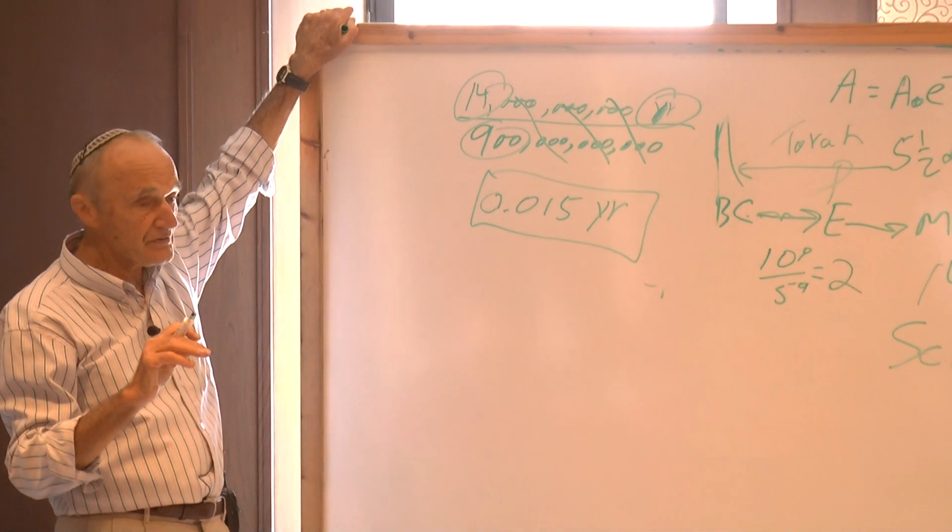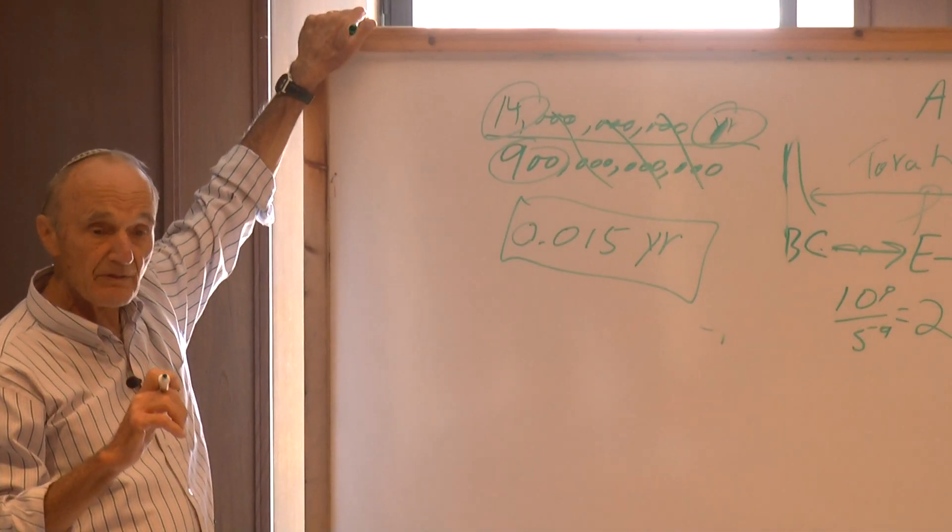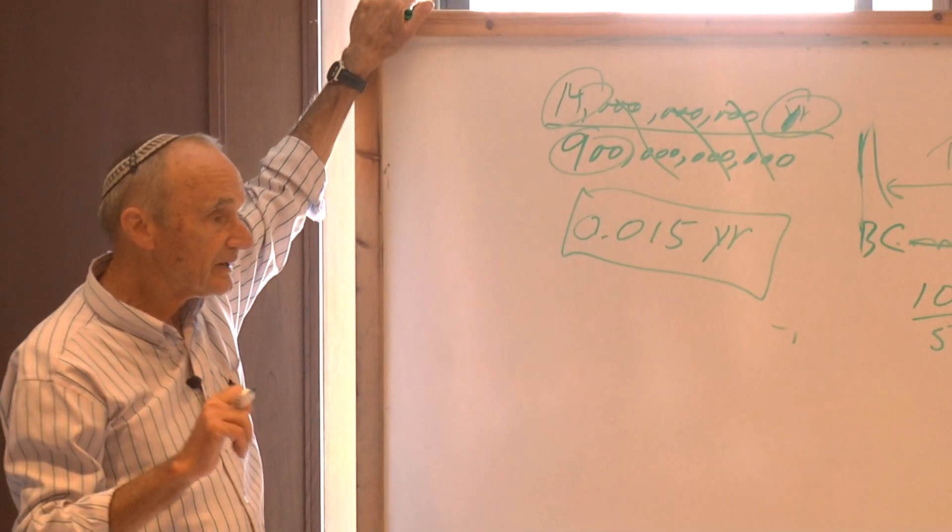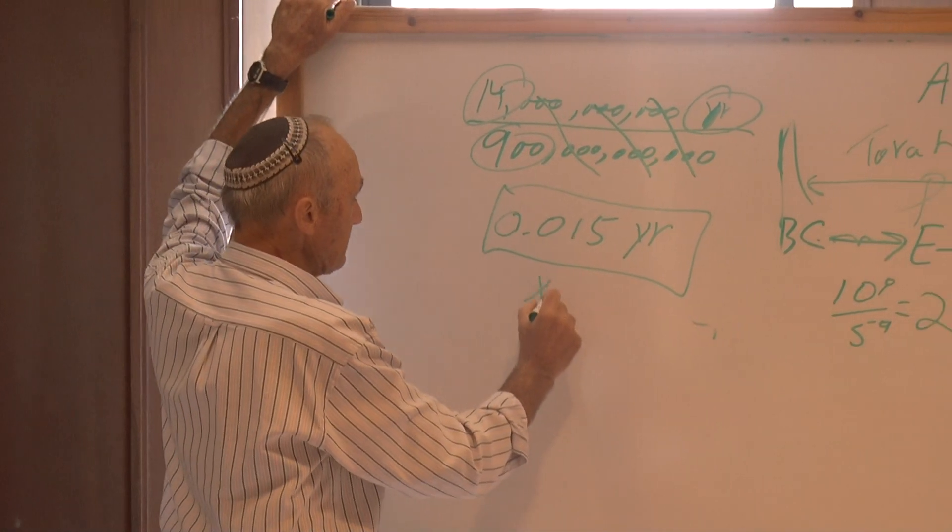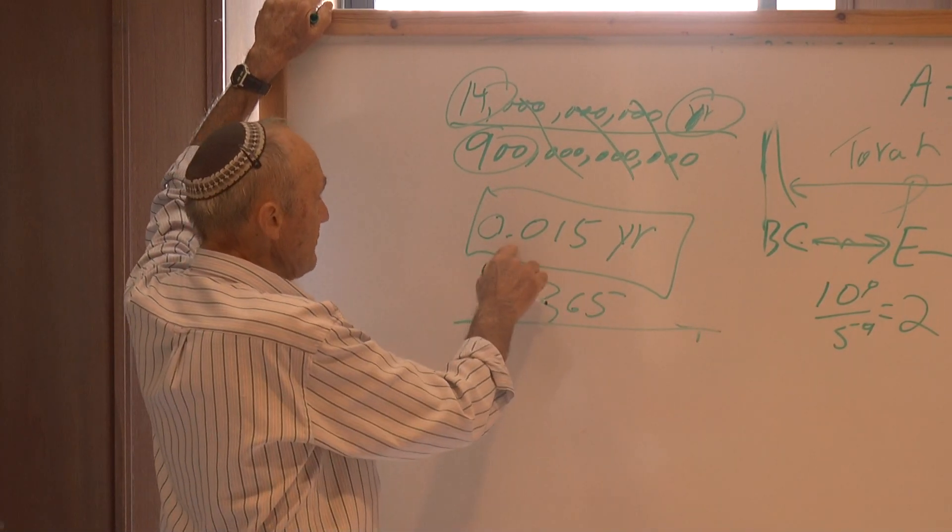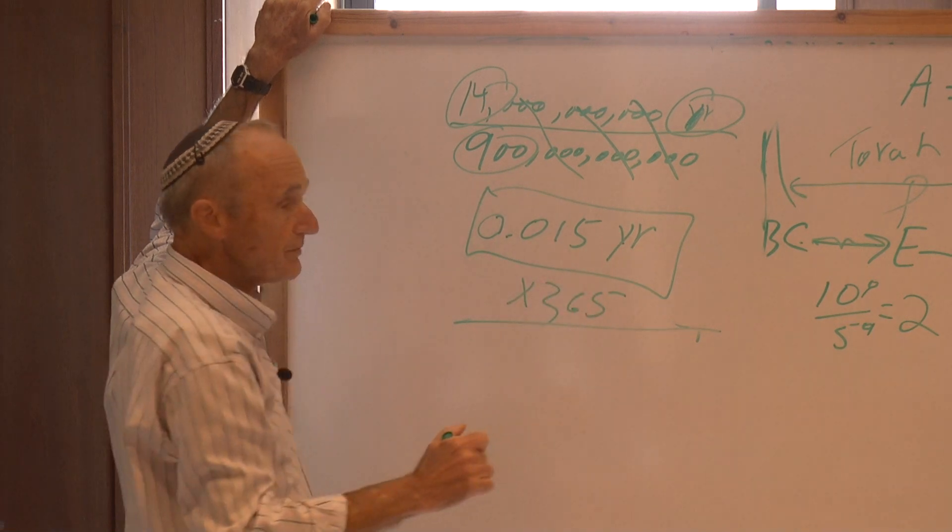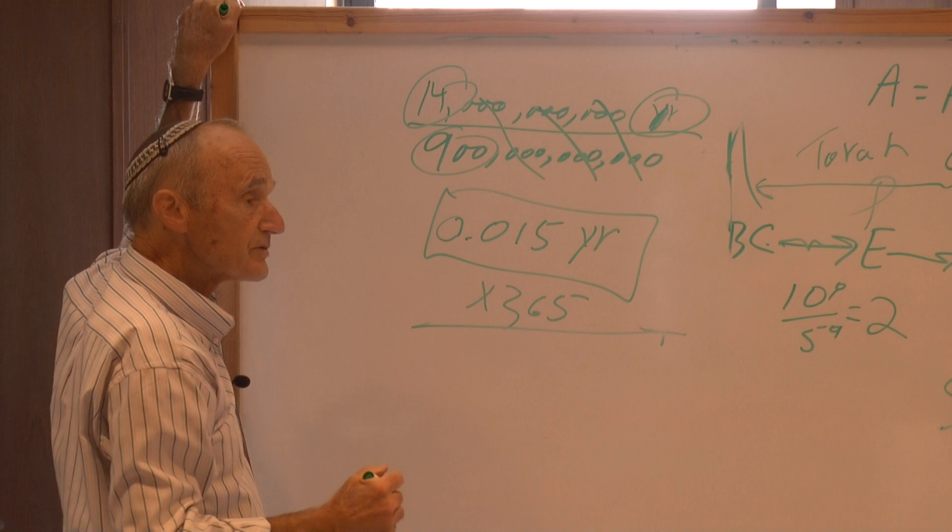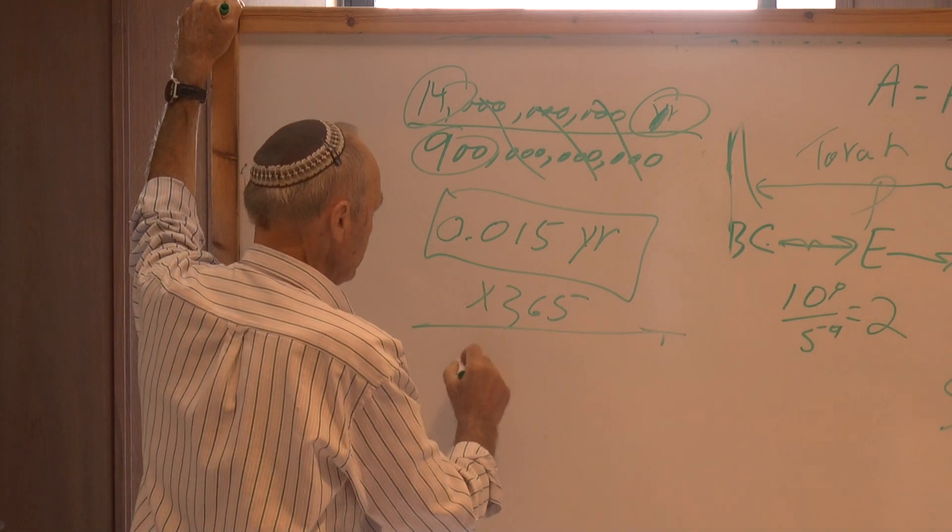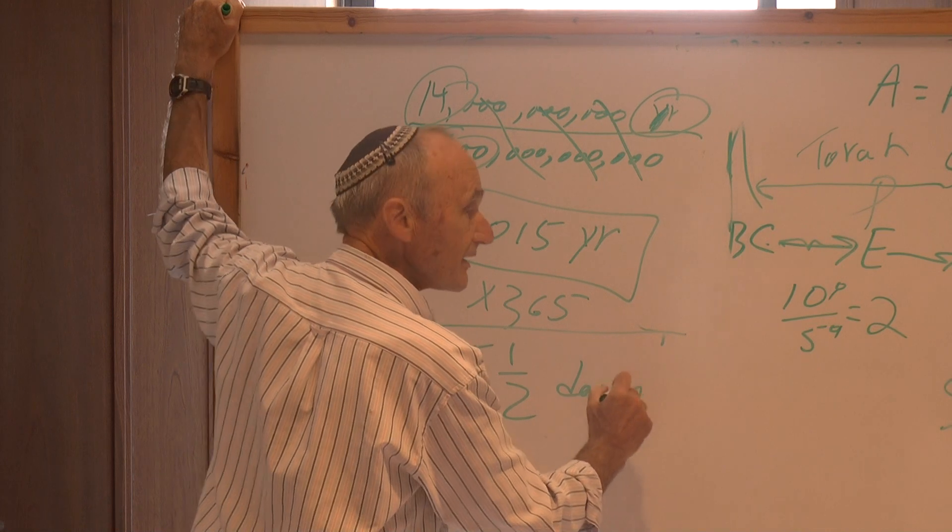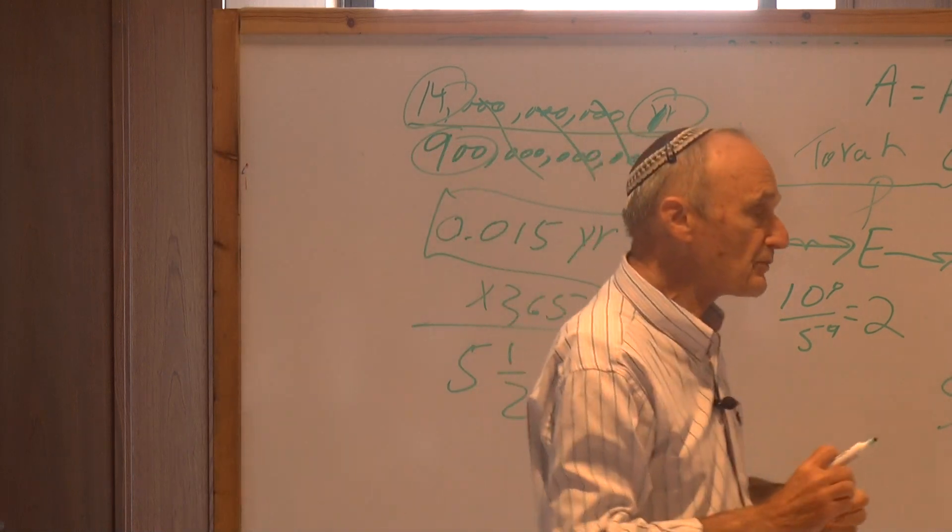Is 15 thousandths of a year. Anyone have a calculator handy? Can you change that into days by multiplying by 365? This is 15 thousand, 0.015 years times 365 to change into days. What is the number? When that number, what's your name? Abigail, when that number came out...